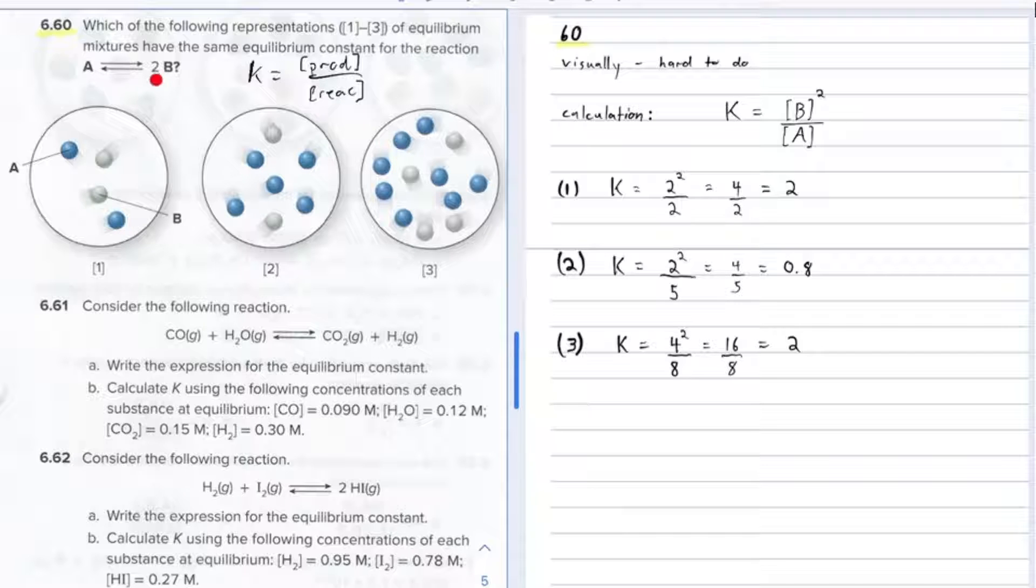Capital K is going to be the product concentrations over the reactant concentrations. But you got one product and one reactant, and so in this case it's going to be the product concentration B, that's going to be squared because of the coefficient two, over the reactant concentration A.